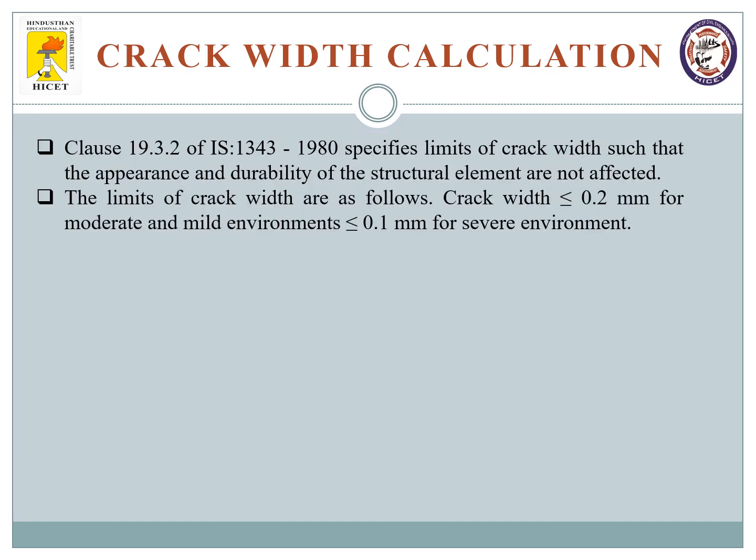As discussed in the previous slides, we know how to theoretically calculate crack width. If you are able to theoretically calculate the crack width, then we have a certain code book like IS 1343-1980 clause 19.3.2. This specifies the limit of crack width such that the appearance and durability of the structural element are not affected.